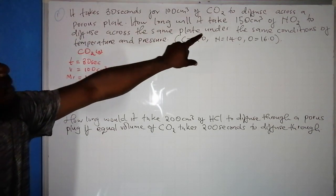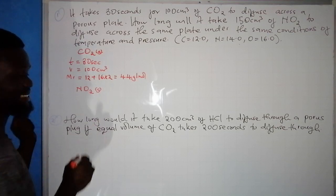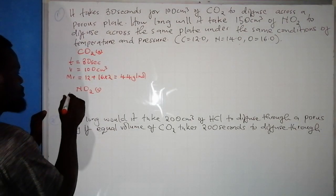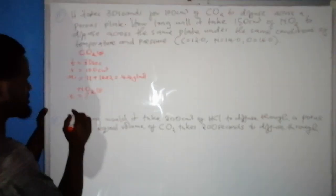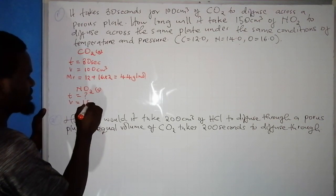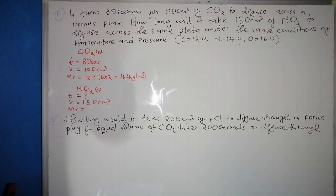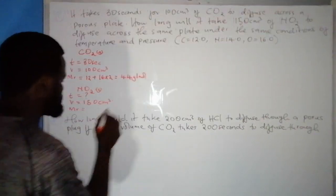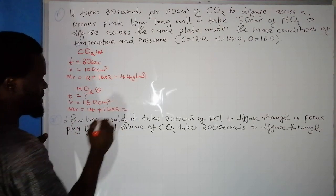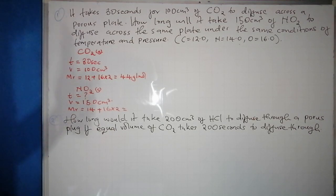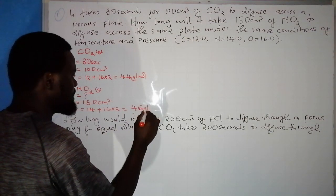The question asks: how long will it take 150 cubic centimeters of nitrogen dioxide (NO₂) to diffuse? For NO₂: the time is what we want, and the volume is 150 cm³. The molar mass of NO₂: nitrogen is 14 plus oxygen is 16 × 2 = 32, so 14 + 32 = 46 grams per mole.